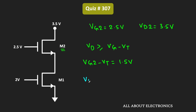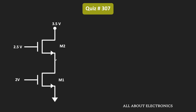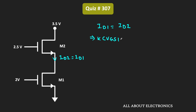Since VD2 is greater than VG2 minus VT, M2 is operating in the saturation region. Similarly, let us find the state of transistor M1. Let us assume that transistor M1 is also operating in the saturation region. Here, this current Id2 is equal to Id1. Since we are assuming that M1 is also operating in the saturation region, we can write Id1 is equal to Id2, which is equal to K times (VGS1 minus VT) squared.